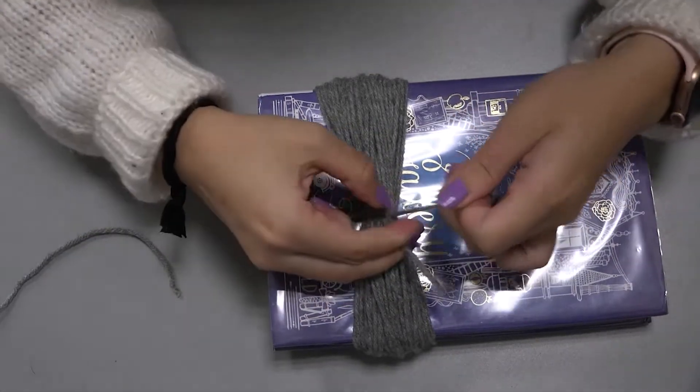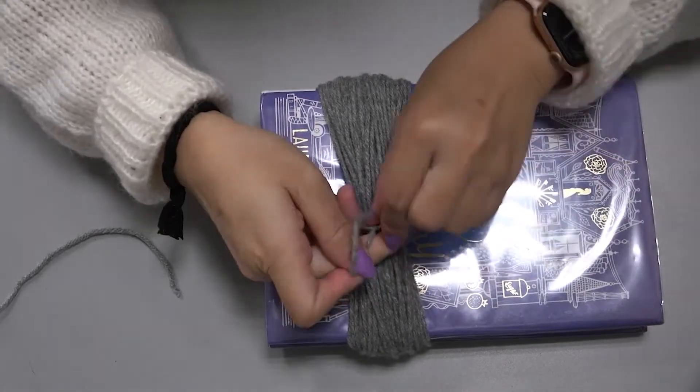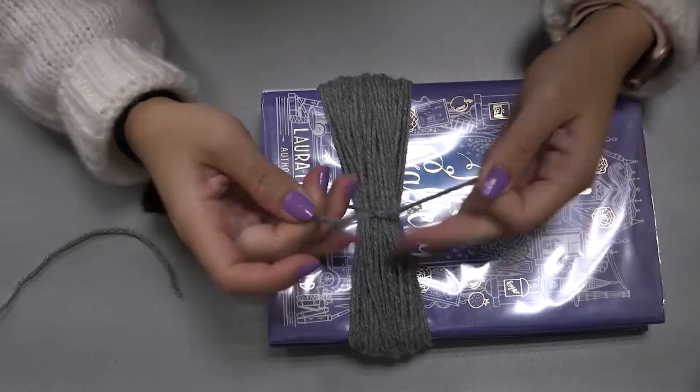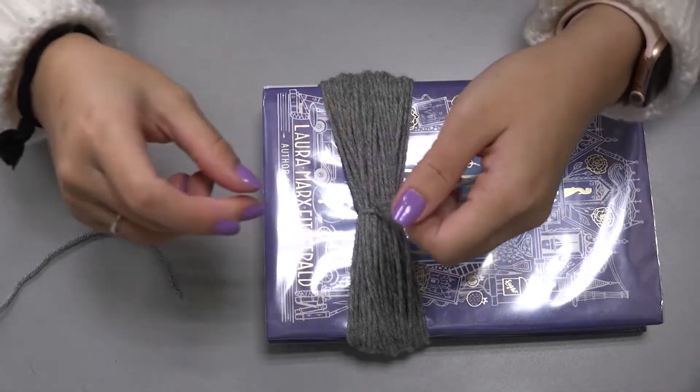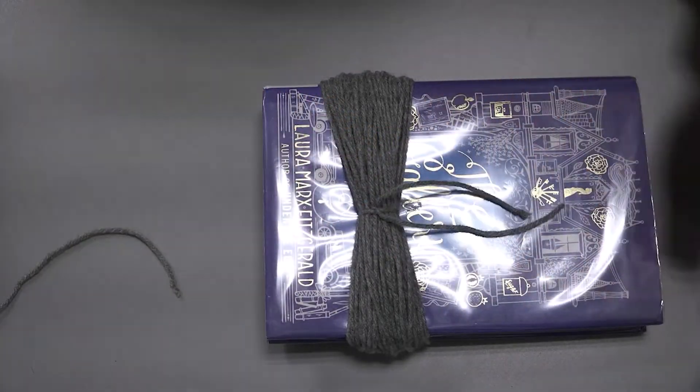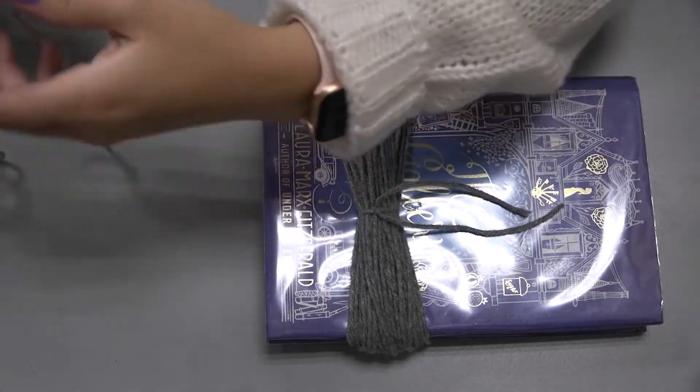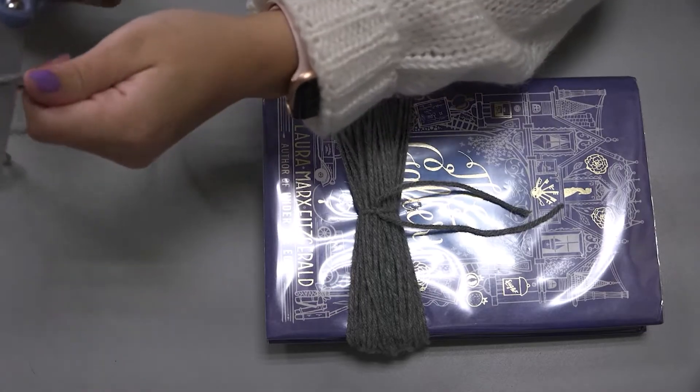Because we want our ghost to be even, right? So you're just going to tie that normally. Just like that. And then you want to grab another piece of yarn, probably the same length, if not a little bit bigger.